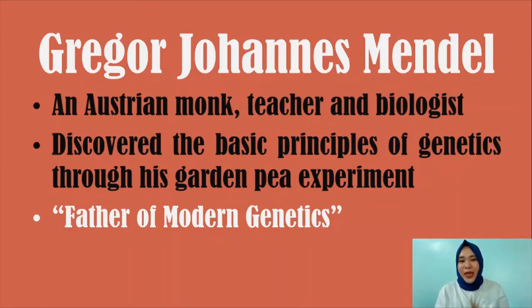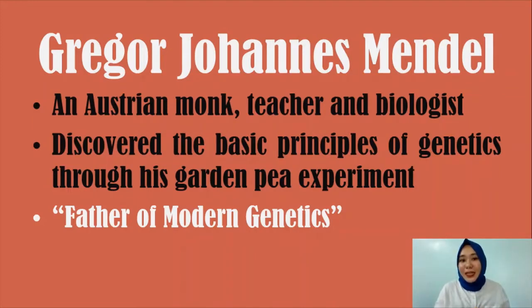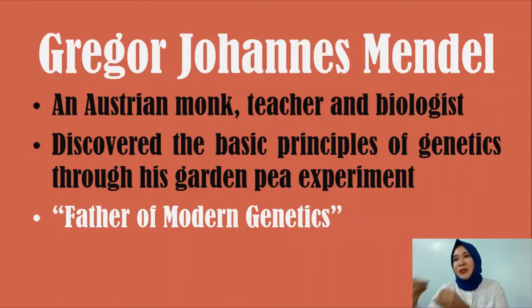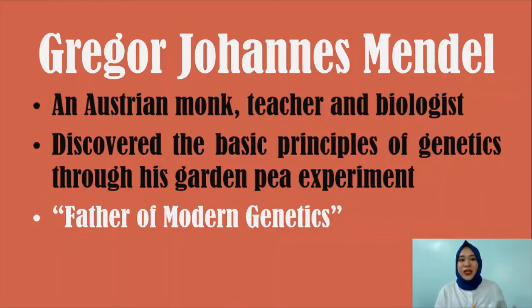Gregor Johann Mendel was an Austrian monk, teacher, and biologist who discovered the basic principles of genetics through his pea plant experiment. You might come across references where Mendelian genetics is also classified as classical genetics, because all basic principles in the study of genetics originate from his work. Even modern genetics has its basic concepts grounded in the results of Mendel's pea plant experiment. Hence, he is also considered the father of modern genetics.